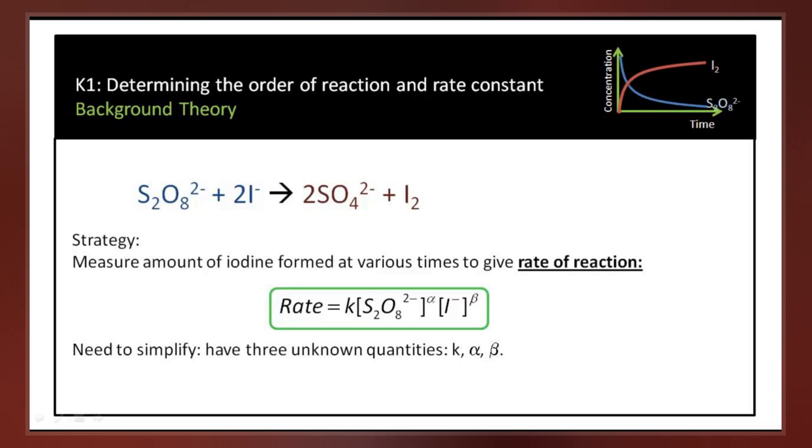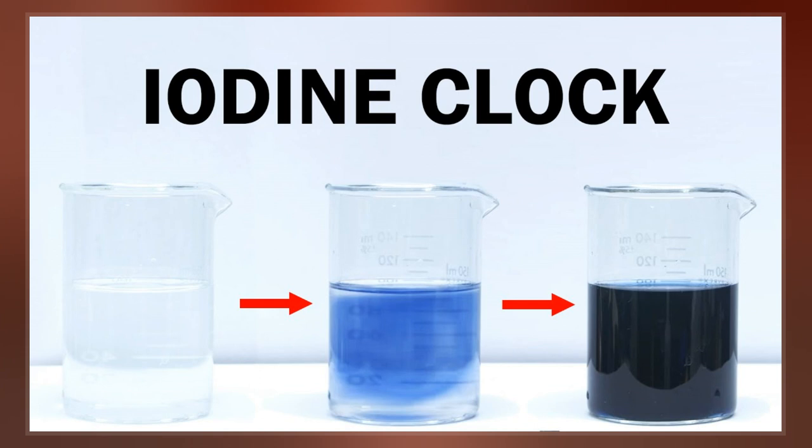This method starts with a solution of hydrogen peroxide and sulfuric acid. To this a solution containing potassium iodide, sodium thiosulfate, and starch is added.